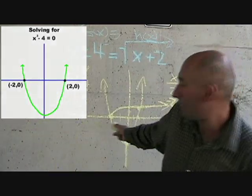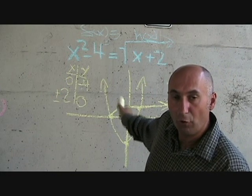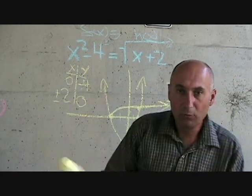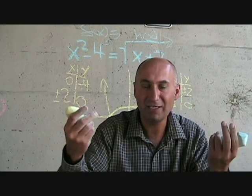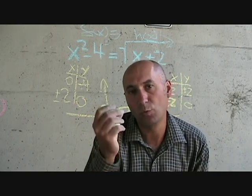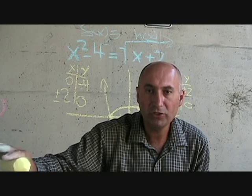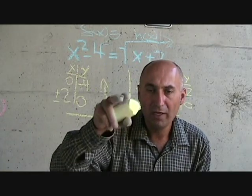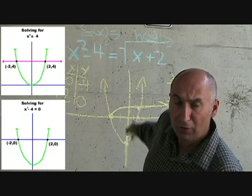The other way that you can solve that question is move the 4 over and bring it over so it becomes x squared minus 4 is equal to 0 and factor it out. And what happens for that if you're graphing that function? That standardizes your solutions. It brings them down to the x-axis.